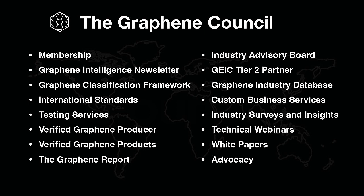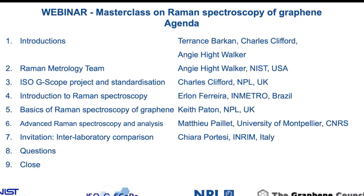We are very active in writing standards for the graphene sector through our involvement in the ISO working groups, including the graphene classification framework, which was authored last year and is going through the standards development process now. We chose Raman spectroscopy as today's topic because it is so widely used when involving graphene materials — it's probably the most commonly used methodology to characterize the material, and it's important that it be conducted consistently and correctly, with results interpreted in a consistent manner.